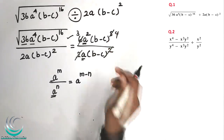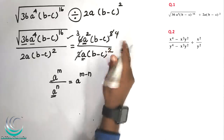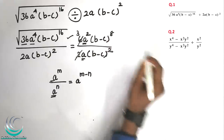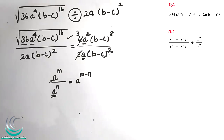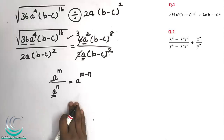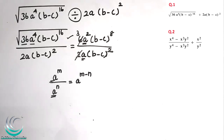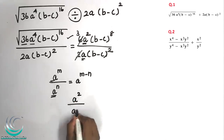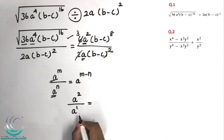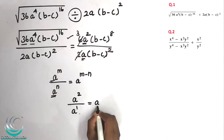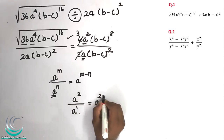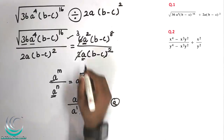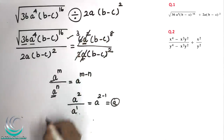There are 4 powers — powers are directly cancelled by subtracting. So: a power 2 divided by a is 2 minus 1, so the answer is a.